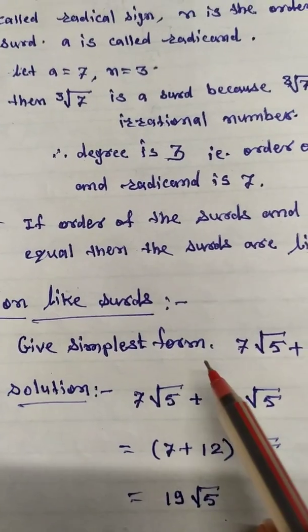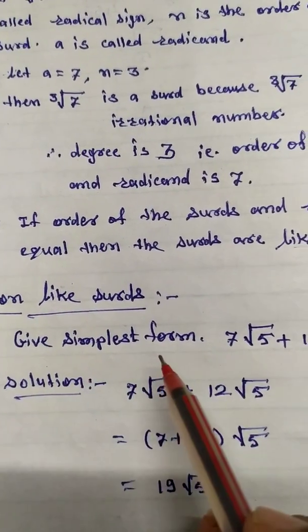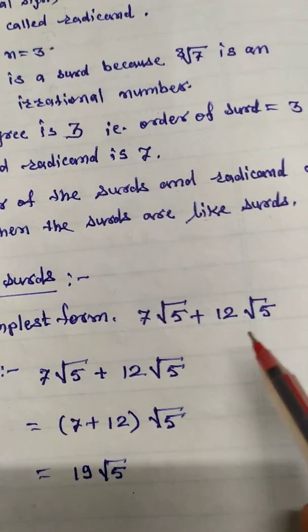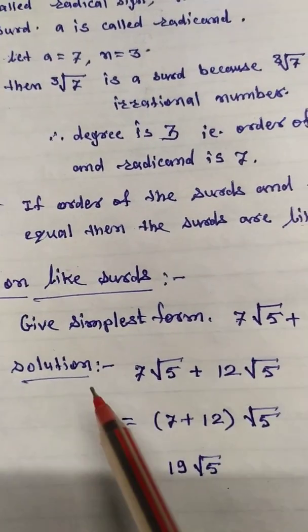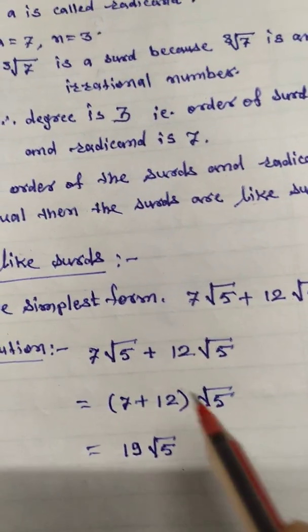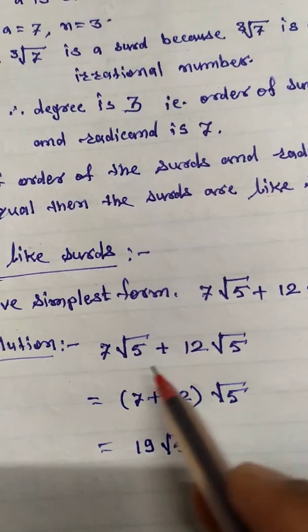Give simplest form. Example is 7 root 5 plus 12 root 5. Now solution, that is 7 root 5, we write this as it is. Now this radicand is same.